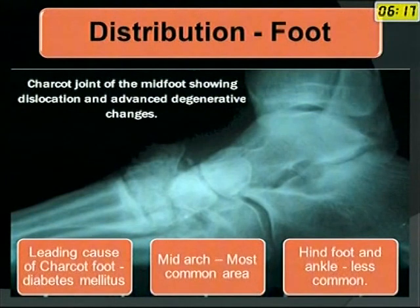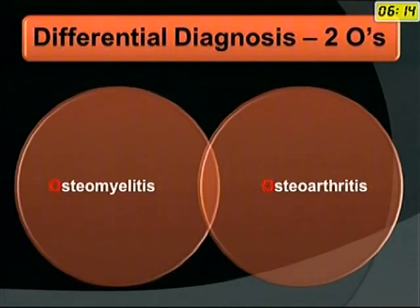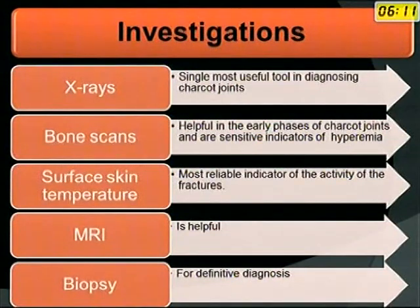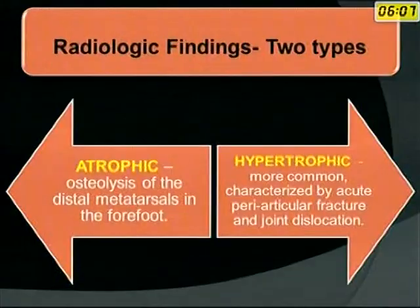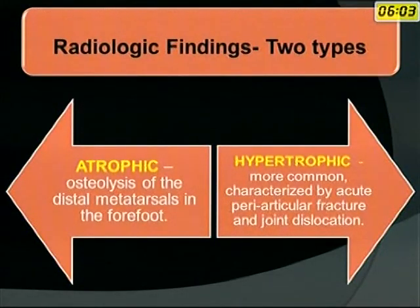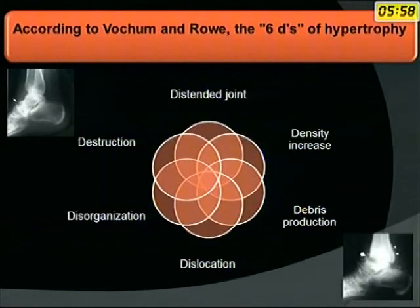As mentioned earlier, the mid-arch is the most common area affected. Differential diagnosis includes osteomyelitis and osteoarthritis. Investigations include X-rays, bone scan, surface skin temperature, MRI, and biopsy. X-rays have two findings: atrophic and hypertrophic — hypertrophic is more common.